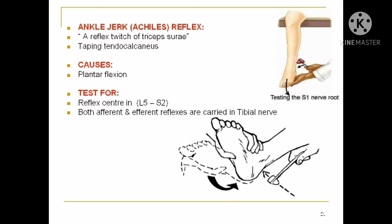The ankle jerk or Achilles reflex is a reflex twitch produced by tapping of the triceps surae tendon. The triceps surae is the combined name for the gastrocnemius, soleus, and plantaris muscles. Tapping this tendon causes plantar flexion. This reflex tests the S1 to S2 segments, and both afferent and efferent reflex arcs are carried in the tibial nerve.